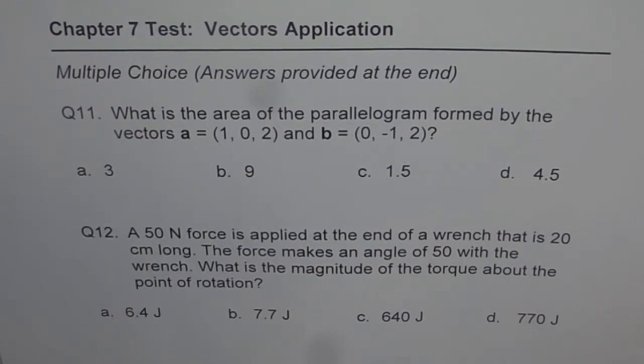Question 11. What is the area of parallelogram formed by the vectors A equals to 1, 0, 2 and B equals to 0, minus 1, 2? Choices are 3, 9, 1.5 and 4.5.